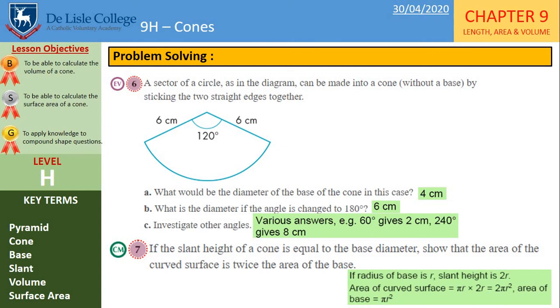And the area of the curved surface, that was pi r L. So pi r times the slant height, pi r times 2r, which gives us 2 pi r squared, which is double the area of a circle.